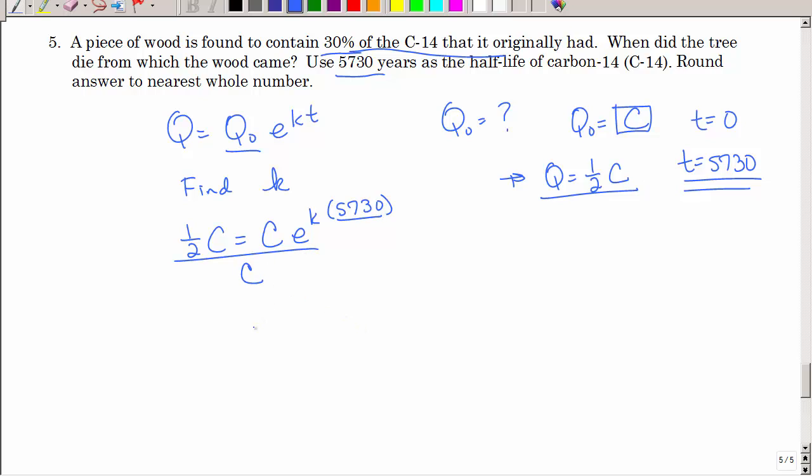Now let's divide both sides by C. Look at what happens. We have one half equals E to the K times 5,730. That's why it's okay when we double if we don't know what we started out with because it's going to divide out. So I'm going to take the natural log of both sides. So we're going to have the natural log of one half equals K times 5,730. And let's solve for K.